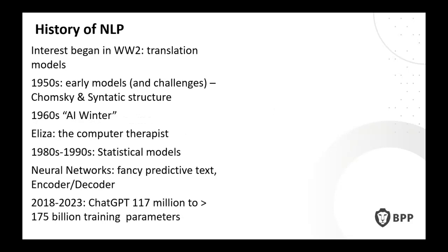Now for a quick history of natural language processing — the computer processing of human language. A lot of interest began in World War II, looking at translation models: could machinery replace humans in translating between languages? The early models and challenges — including work by Chomsky — revealed that it's not as simple as translating one English word into a French or German word, because you need to look at the wider structure of the sentence.